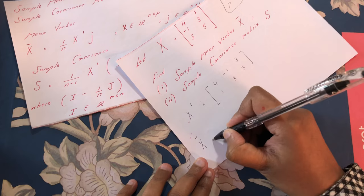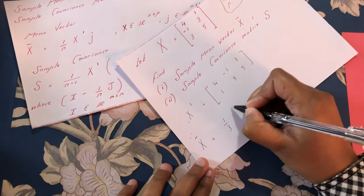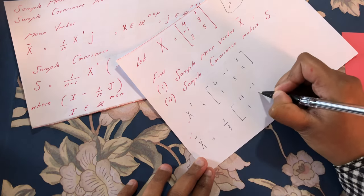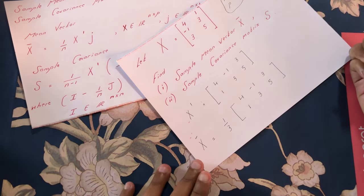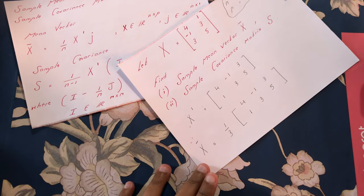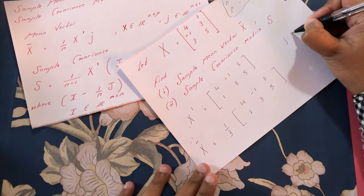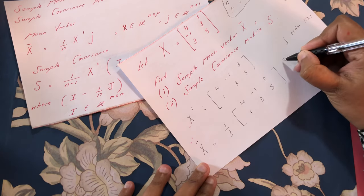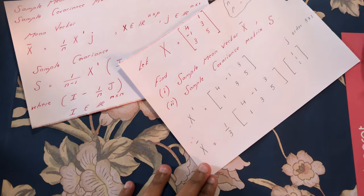x-bar is equal to 1 over n, which is 3, multiplied by X-transpose — the matrix 4, 1, minus 1, 3, 3, 5 — multiplied by lowercase j. j is of order n by 1, which means j is of order 3 by 1, so we have a vector of 1s of order 3 by 1.